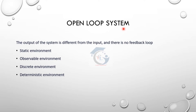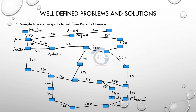Open loop system: let's see how the agent works in an open loop system. There is a static environment, observable environment, discrete environment, and deterministic environment. In a deterministic environment, the current state will have a problem, then we configure it and react to the next state.